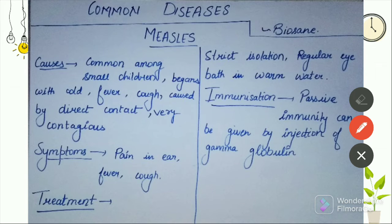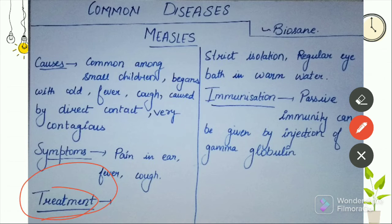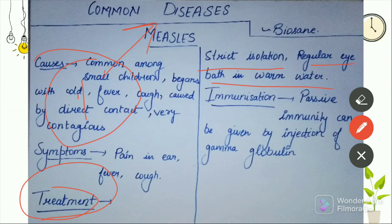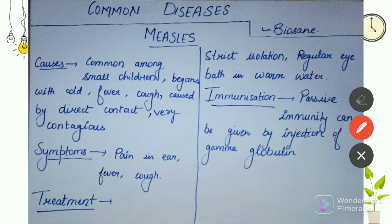Symptoms include pain and fever. For treatment: strict isolation — if one person has measles, they should be isolated and not in contact with others. Regular eye wash with warm water is recommended. Next is immunization — passive immunity can be given by injection of gamma globulin.